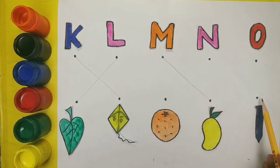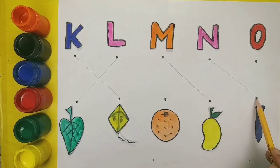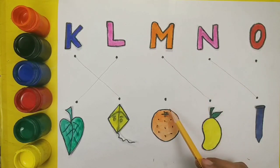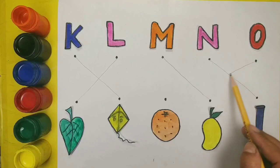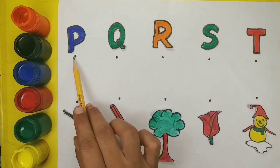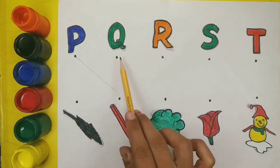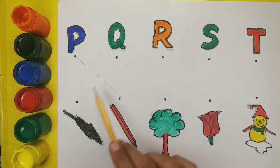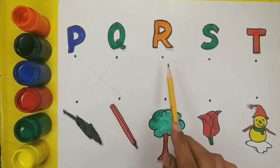N. N for nail. O. O for orange. P. P for pencil. Q. Q for quill.